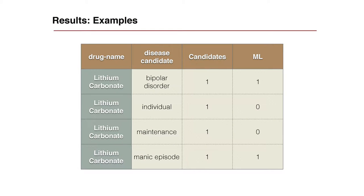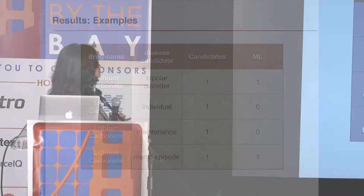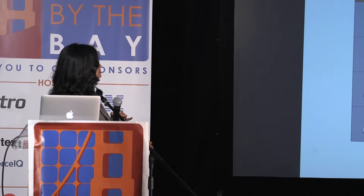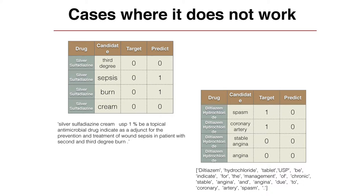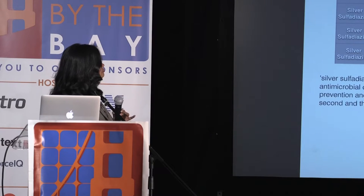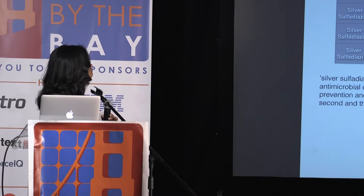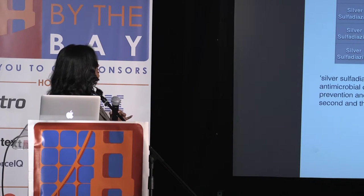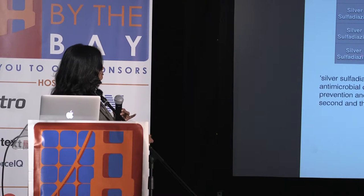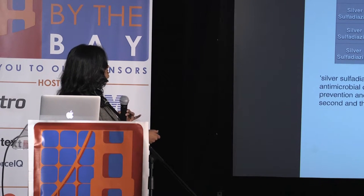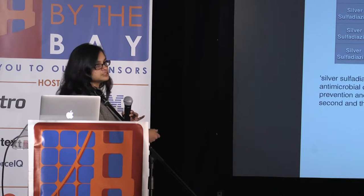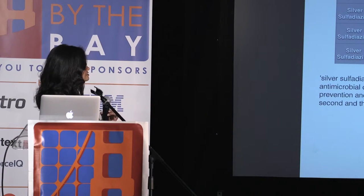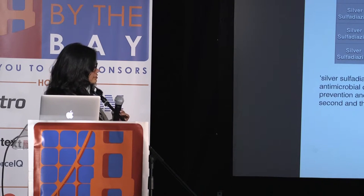Here is one of the results: the drug lithium carbonate, and it correctly identifies bipolar disorder and manic episode as the conditions it treats, while predicting other words as zero. I also want to show where it goes wrong — for two reasons. One is where the prediction itself is not good. The other is where the labeling in the training set is not very good — for instance, a cream used for third-degree burns was labeled as not a disease in the training set, which brought the score down. This can be improved with better automatic training data creation.